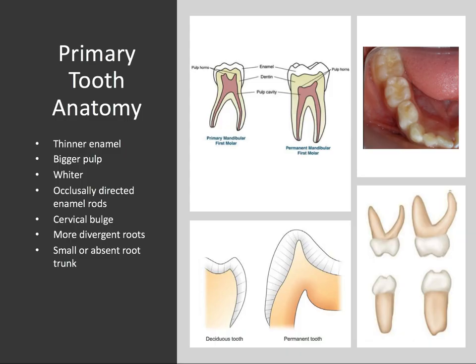The biggest thing to know about primary teeth is that they have thinner enamel than their permanent tooth counterparts — about one millimeter of enamel thickness versus two millimeters for permanent teeth on average. Also, the enamel is more uniform in depth around the tooth, whereas for a permanent tooth it can be more variable depending on where you are.